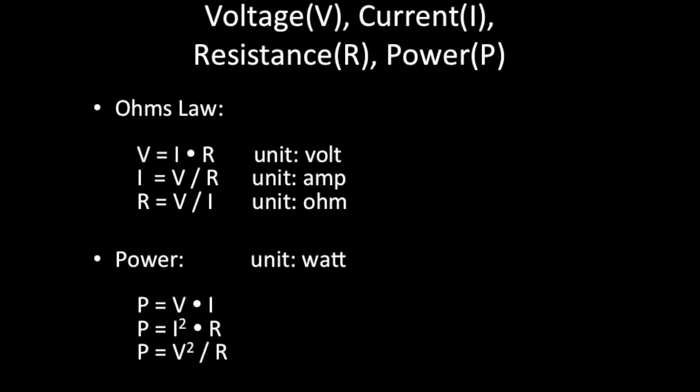So just to review, Ohm's law tells us that voltage equals current times resistance. So current is I, resistance is R, voltage is V, the unit of voltage is the volt. Then we can rearrange that and express it as I, current, equals voltage divided by resistance. The unit of current is the ampere or amp, and then finally resistance equals voltage divided by current, and the unit of resistance is the ohm.